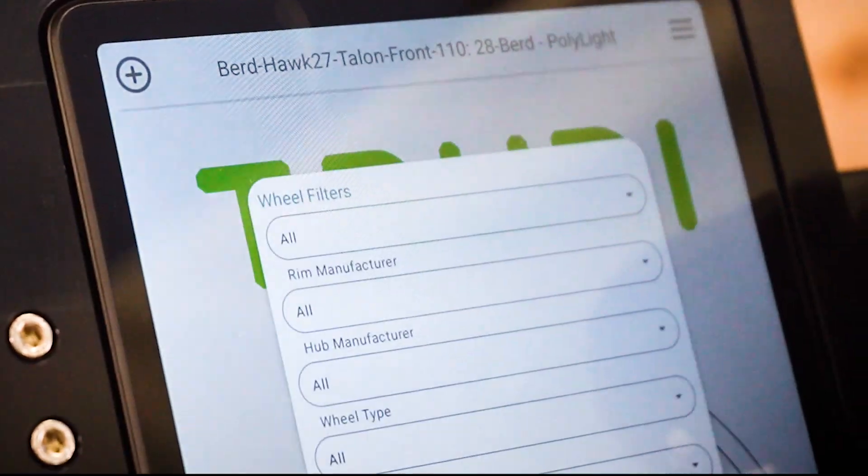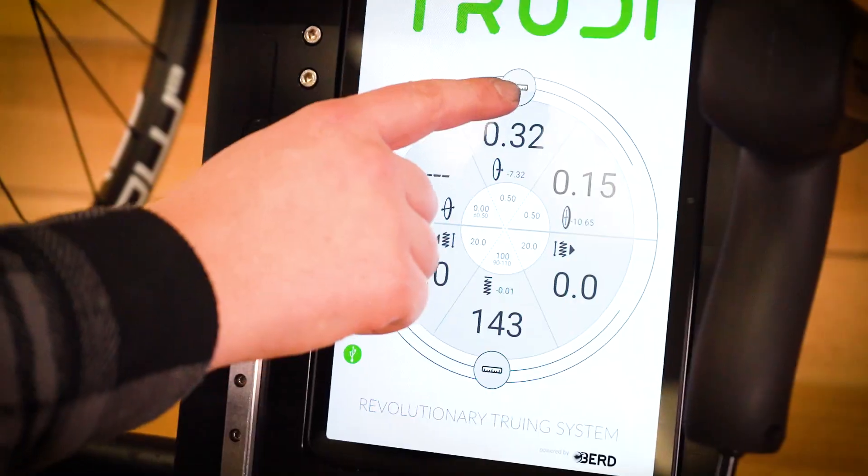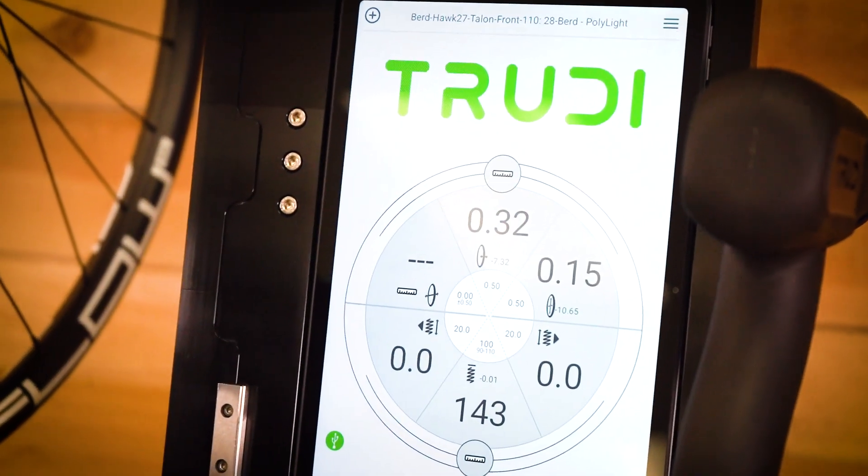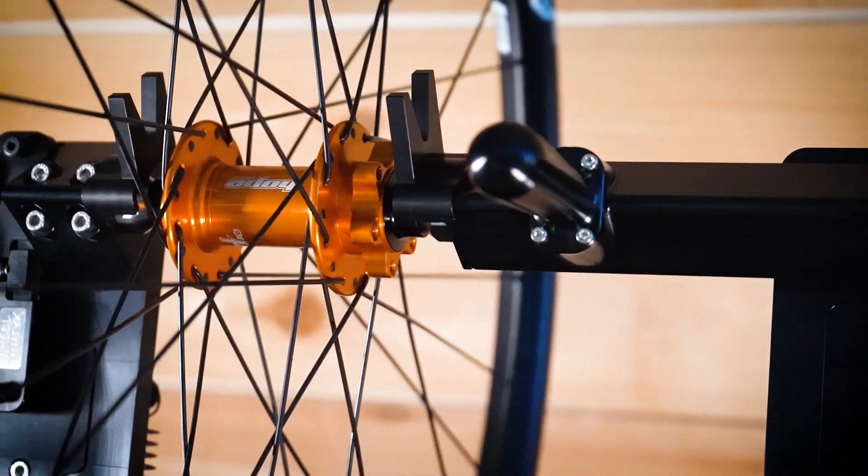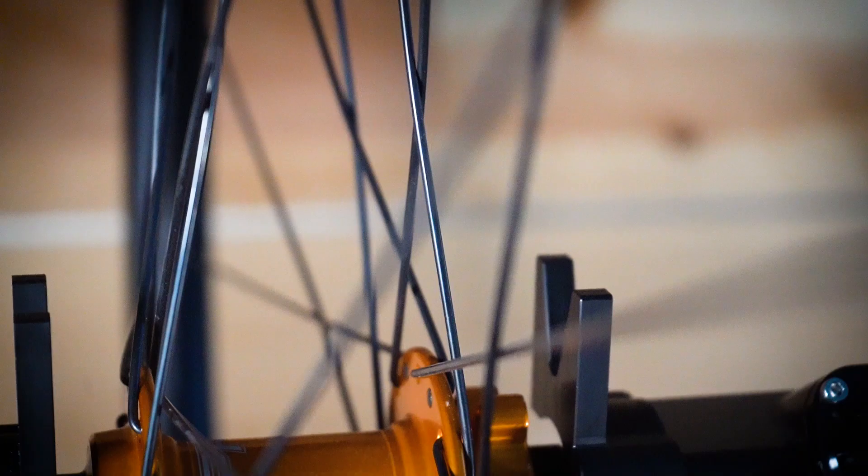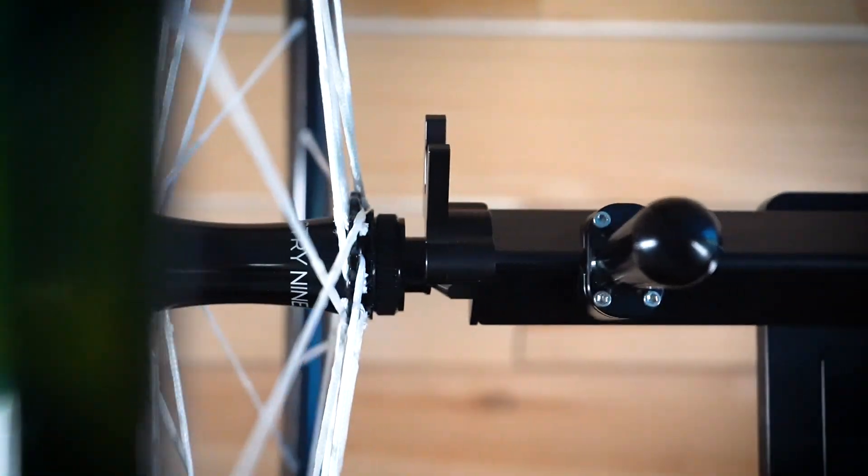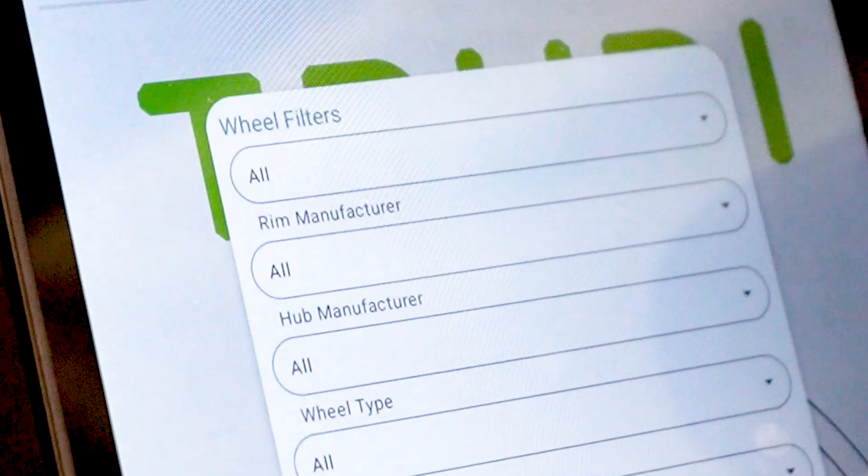The process starts by selecting a recipe which defines how the system will respond to adjustments. There are three factors that determine the recipe. First, spoke type. The system works with all spoke types, but the correct material and size must be selected from the drop-down list.